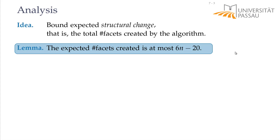Remember that in the very end we have at most 3n-6 edges, which gives us at most 2n-4 facets in the convex hull. So in the expected case we create at most about three times as many facets.